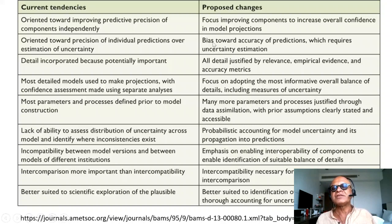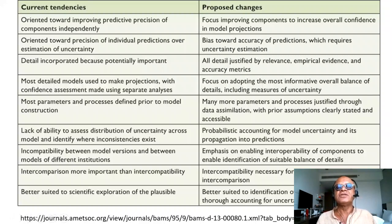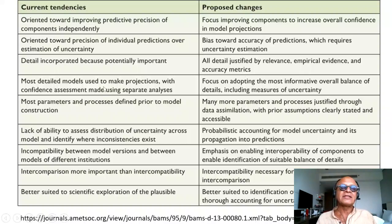Current models are oriented towards precision of individual predictions over estimation of uncertainty. The bias towards accuracy of predictions needs to shift, with uncertainty estimation needing to be incorporated in more detail. The proposed changes suggest that all details justified by relevance, empirical evidence, and accuracy metrics should be included — this keeps changing as we collect more data, which is a good thing as long as we can track the uncertainties and constrain the parameters.